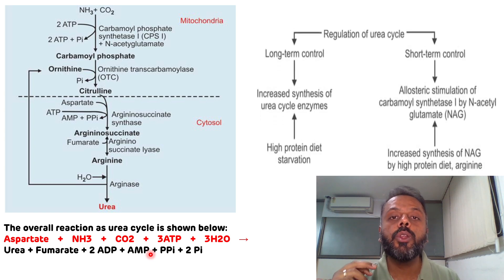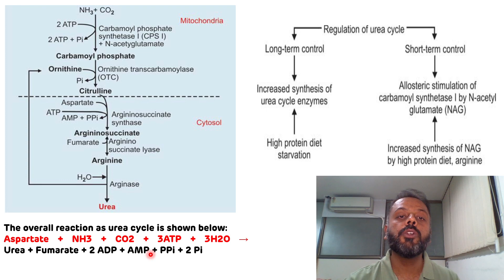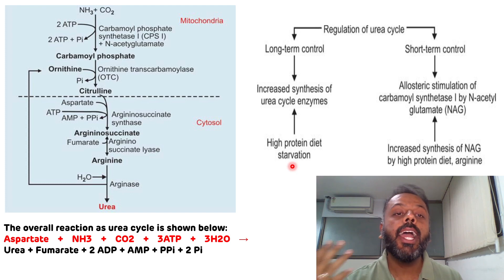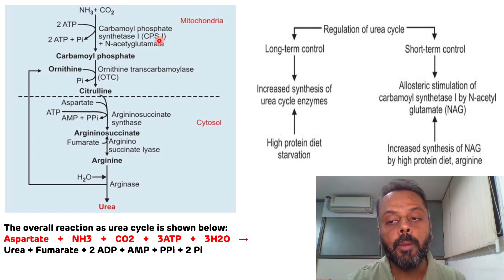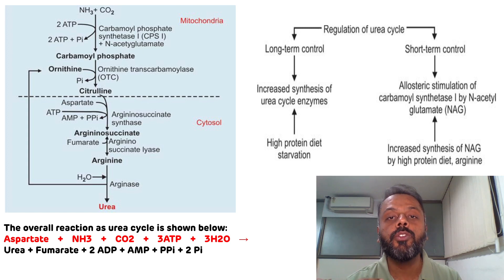The urea cycle is regulated by two means: long-term control and short-term control. In long-term control, there is increased synthesis of urea cycle enzymes, and this particularly occurs when you are taking a high-protein diet or in starvation. Short-term control occurs by allosteric stimulation of the rate-limiting enzyme CPS1, which is done by N-acetylglutamate. Increased synthesis of N-acetylglutamate occurs when you are taking a high-protein diet.